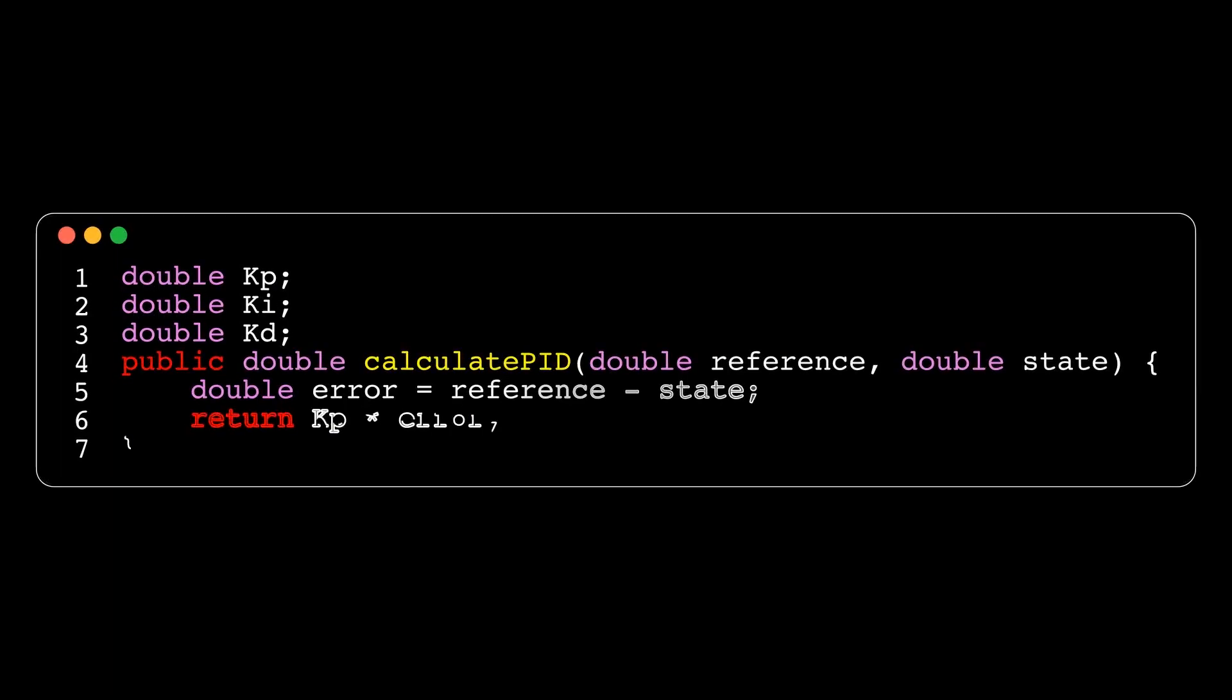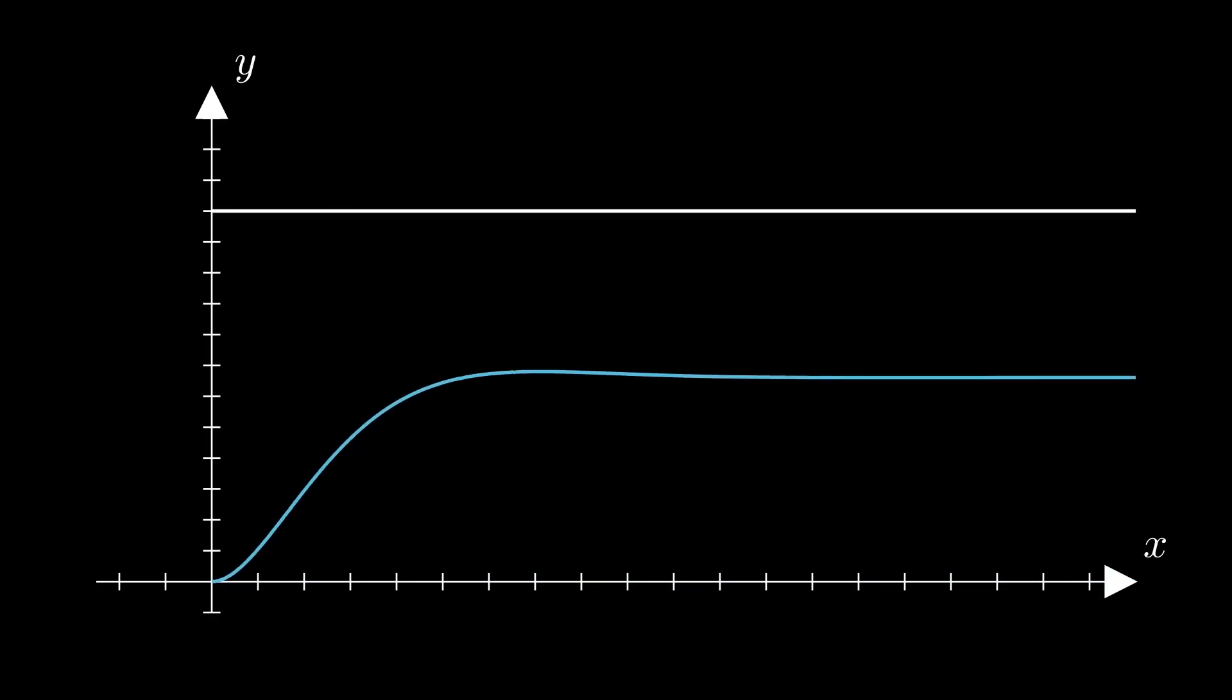We can then build a preliminary proportional or P controller from this error. Suppose we plot the state of our system where the x-axis is time and the y-axis is the system's state. In that case, we can see that the state of our system will asymptotically converge to the setpoint. Still, it will never arrive precisely at the setpoint due to friction.